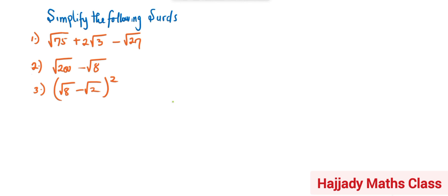You have to know the perfect squares from 1 to 100. Perfect squares are numbers that we can easily find the square root of. Here we have 1, 4, 9, 16, 25, 36, 49, 64, 81, and 100. There is a need for us to know these perfect squares.